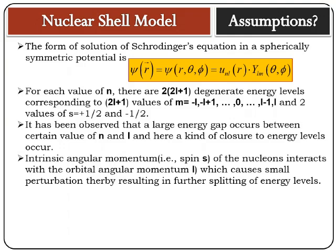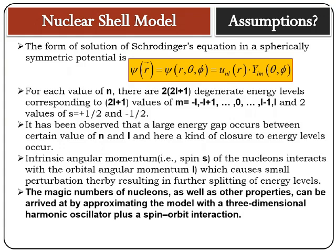The intrinsic angular momentum (spin s) of the nucleons interacts with the orbital angular momentum l, causing a small perturbation, thereby resulting in further spreading of energy levels. The overall result of this entire calculation is that the magic numbers of nucleons, as well as other properties, can be arrived at by approximating the model with a three-dimensional harmonic oscillator plus a spin-orbit interaction term.